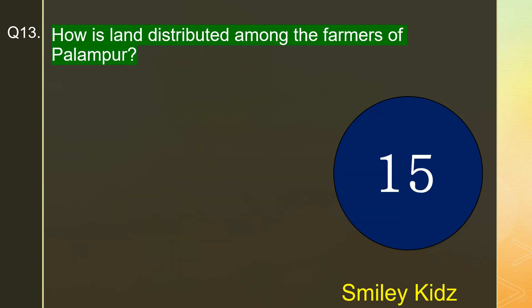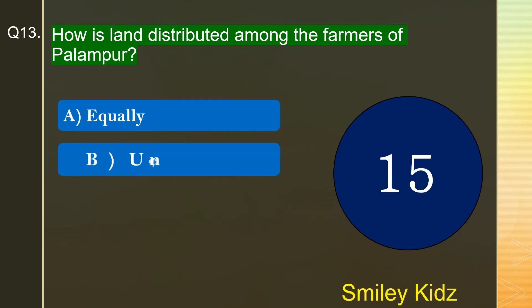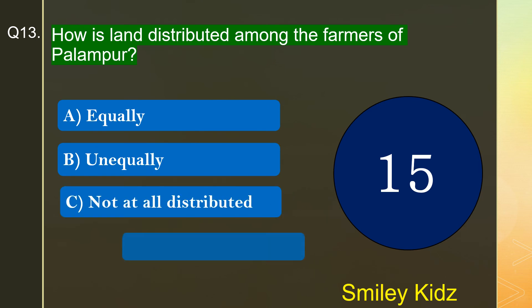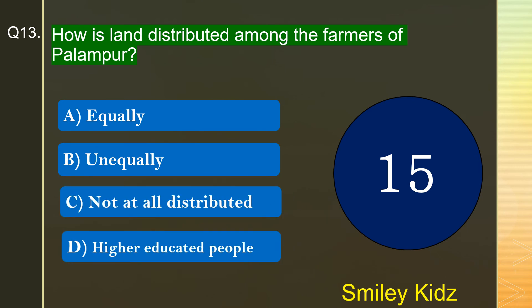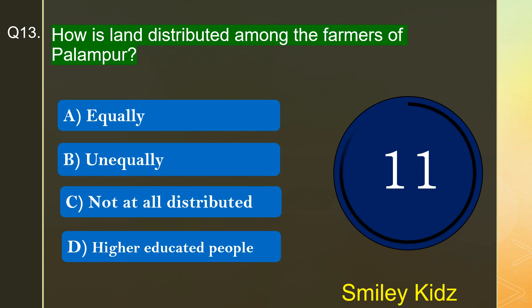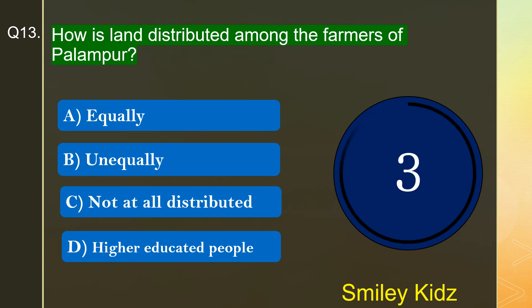Question number 13. How is land distributed among the farmers of Palampur? The options are A. Equally, B. Unequally, C. Not at all distributed, or D. Higher educated people. Your time starts now. Your time is up and the right answer is option B. Unequally. The land is distributed unequally among the farmers of Palampur.